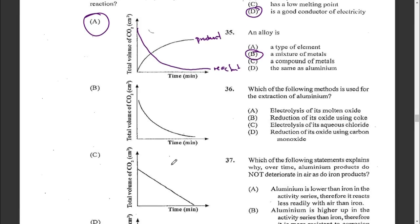Question thirty-six: which method is used for the extraction of aluminum? The options are: A — electrolysis of its molten oxide, B — reduction of its oxide using coke, C — electrolysis of its aqueous chloride, or D — reduction of the oxide using carbon monoxide. The answer is A — electrolysis of its molten oxide.